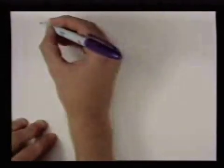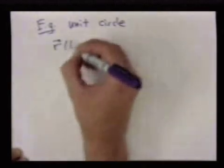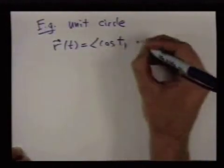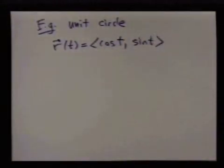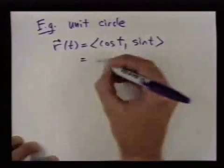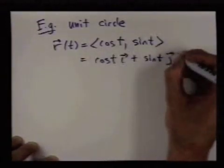Before I do anything too fancy, let me give an example in two dimensions, which is the unit circle. You've probably already seen this, but the way we can write the unit circle in two dimensions is (cos t, sin t). That's what trig functions do for us — for any given value of t, thinking of that as an angle, cosine of that angle comma sine of that angle specifies a point on the unit circle. We can also write this with i and j notation.